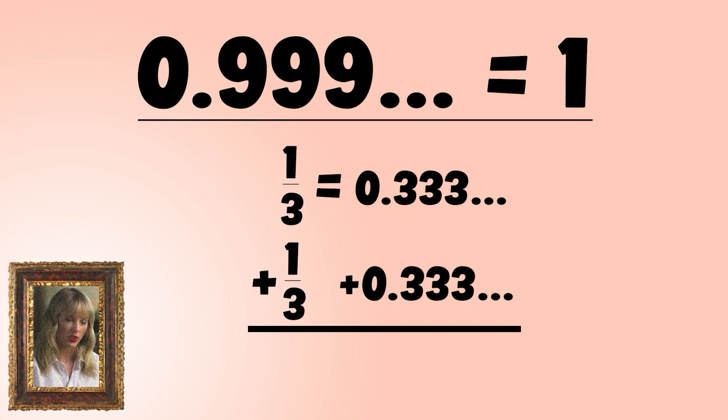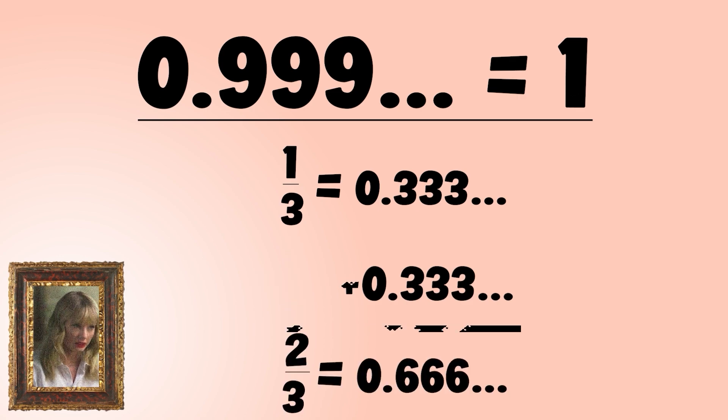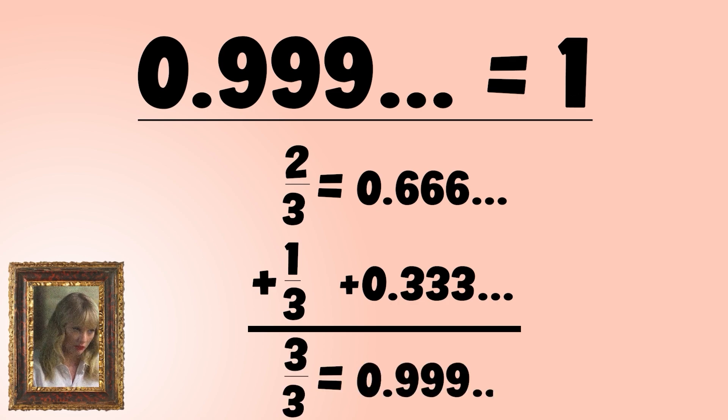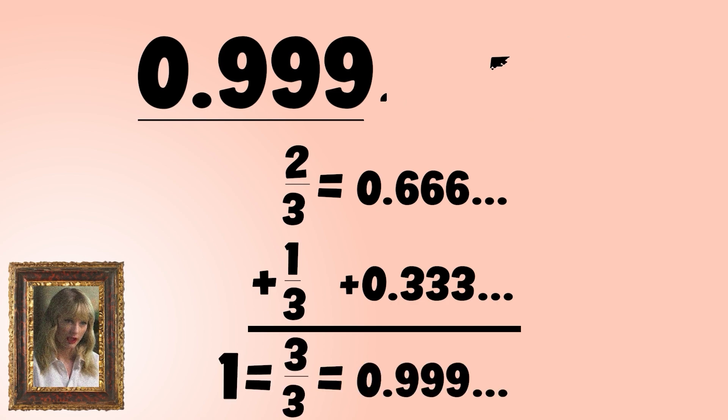Now let's add one third to both sides using the addition property of equality. And again, see, we have now shown that one equals 0.9 repeating. How cool is that?